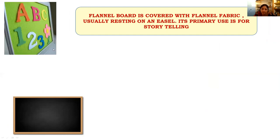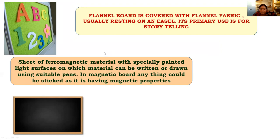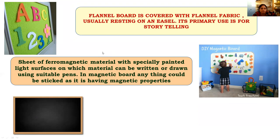Next comes the flannel board. As you can see in the picture, a flannel board is a board covered with flannel fabric — a woolen-like material that can hold any object stuck to it. It usually rests on a frame. Its primary use is for storytelling — we tell stories by sticking flannel graphs onto it. As shown in the picture, letters like A, B, C and numbers, flowers, and other items are all stuck on it, and it is used as a storyboard to convey information to the audience.